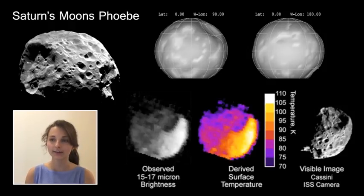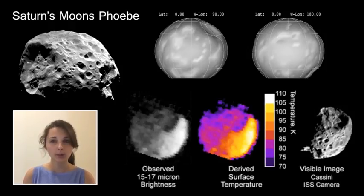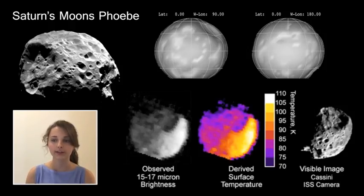Phoebe is another satellite of Saturn and is more irregular in shape. Phoebe is believed to actually be a captured centaur that originated in the Kuiper belt. It is roughly spherical and has a differentiated interior, and it orbits Saturn in a retrograde orbit. Phoebe has very low albedo and deep craters. Large quantities of ice below the surface and carbonate material on its surface have been observed by Voyager 2 and Cassini.